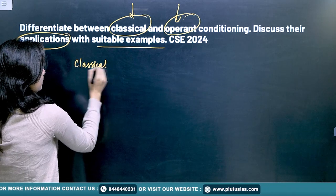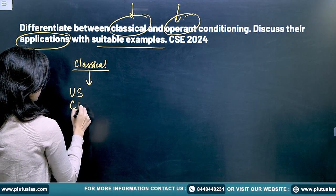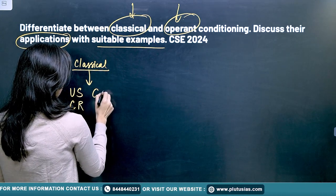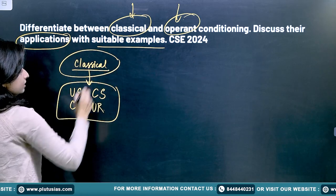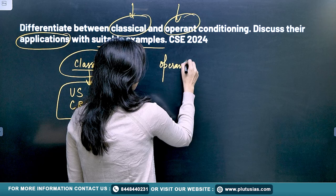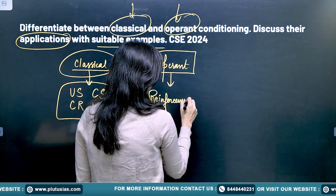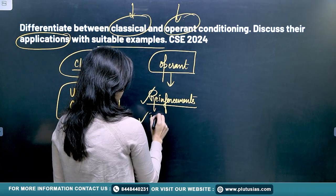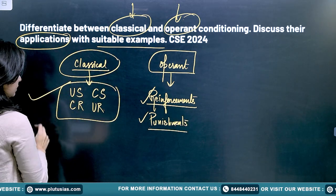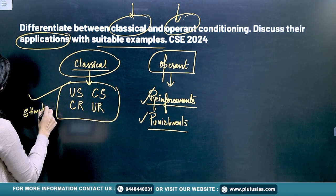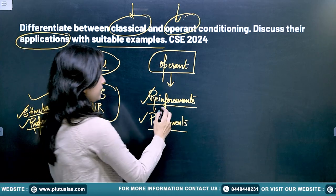If you have studied classical and operant conditioning, you'll know that classical conditioning deals with the unconditioned stimulus, conditioned response, conditioned stimulus, and unconditioned response. You'll explain all of this for classical conditioning. When it comes to operant conditioning, you'll talk about the stimulus and response, and you'll explain reinforcements and punishments.